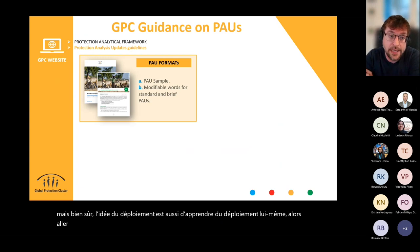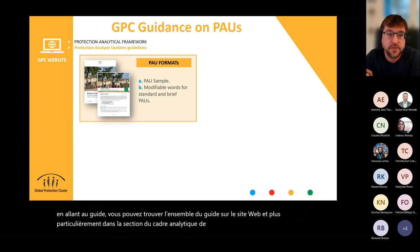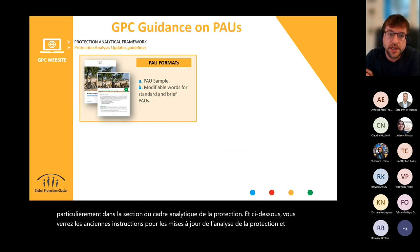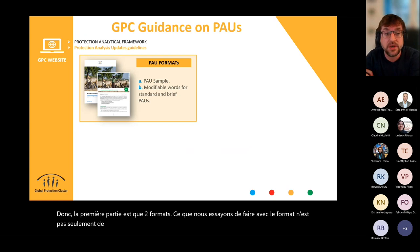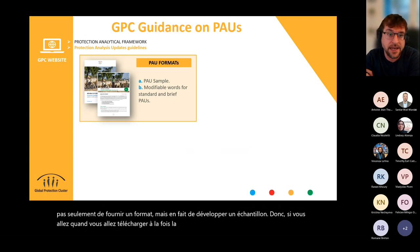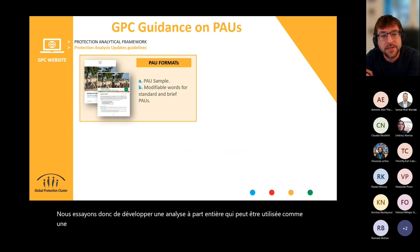You can find the whole guidance on the website, specifically in the section of the Protection Analytical Framework. Below you will see the old guidance for both the protection analysis updates and protection risks. The first part is two formats. What we tried to do with the formats is not just provide a template but actually develop a sample — when you download both the standard and the brief, you'll see they already contain an analysis. We tried to develop a full-fledged analysis that can be used as inspiration, not to be identical, but to build upon.